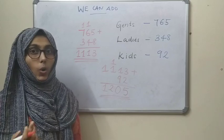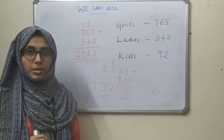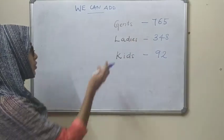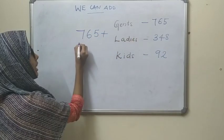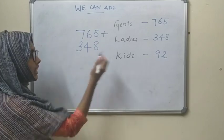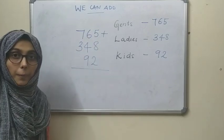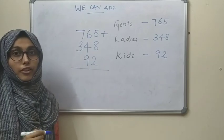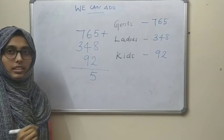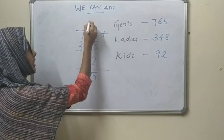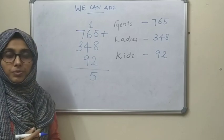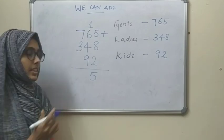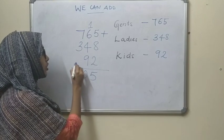Now I am going to show you how we can add every number in only one step. We add 765 plus 348 plus 92 all together. First: 5 plus 8 is 13, plus 2 is 15 — write 5 and carry 1. Now 6 plus 1 is 7, plus 4 is 11, plus 9 is 20 — write 0 and carry 2.